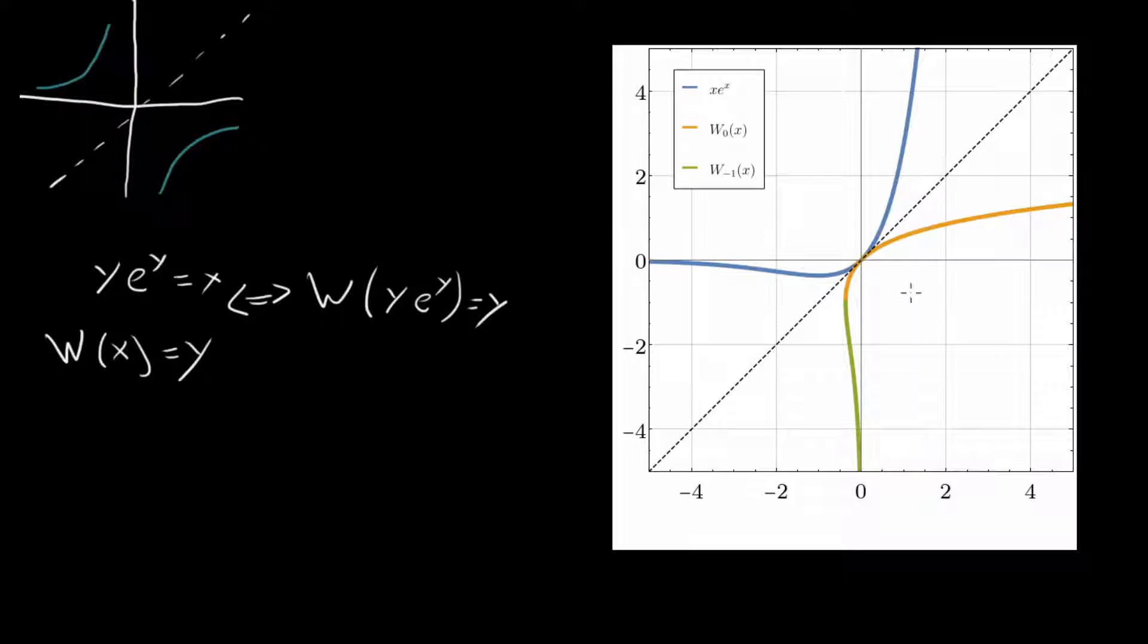Then we have our vertical line here, or rather our line y equals x. And then we have our Lambert W function. And you'll notice that right off the bat something interesting is going on. Because x e to the x here fails the horizontal line test. That is, it dips down here then dips back up. And so what that means is that for a certain value of y, there are two values of x for which you have a potential solution.